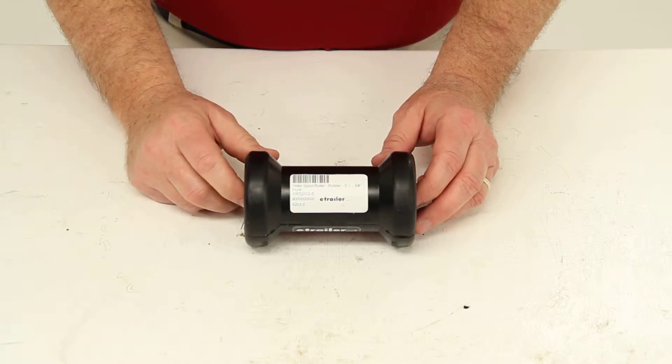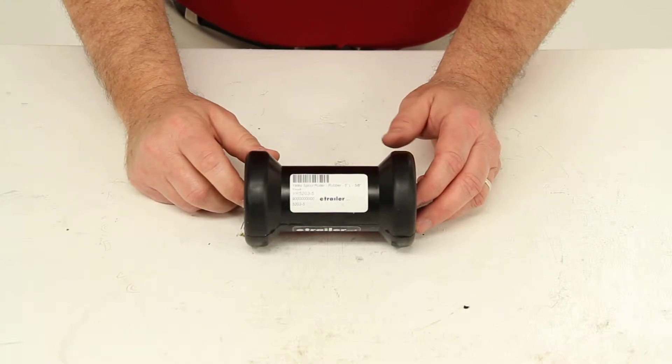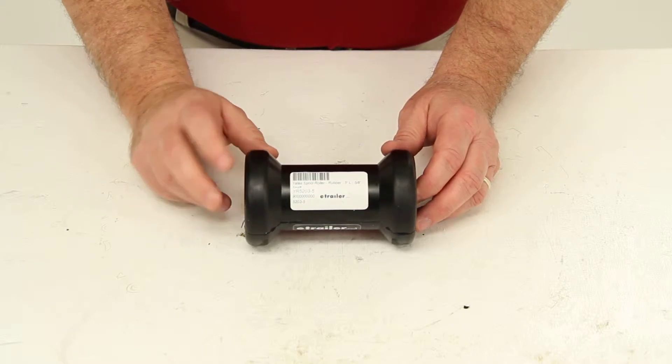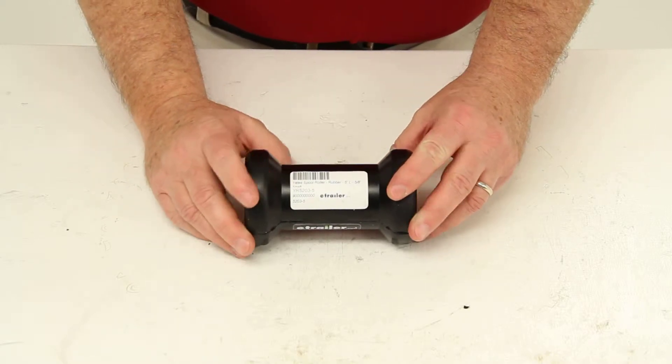Today we're going to review part number YR5203-5. This is the Yates spool roller for boat trailers.